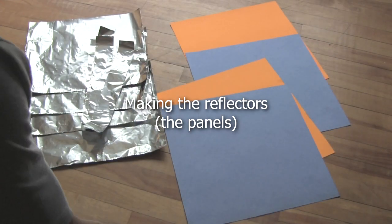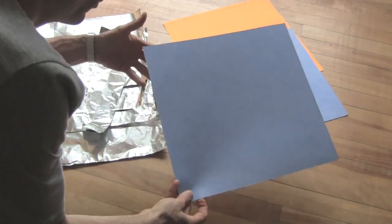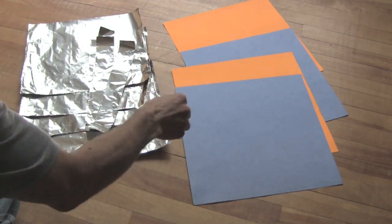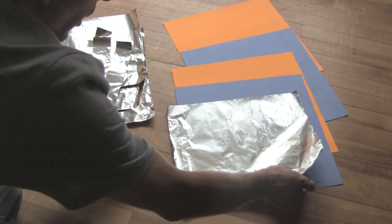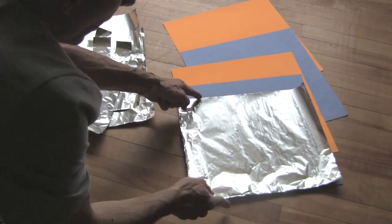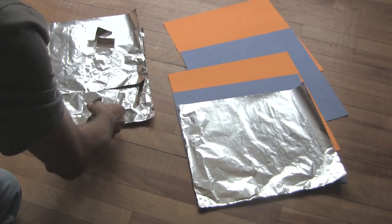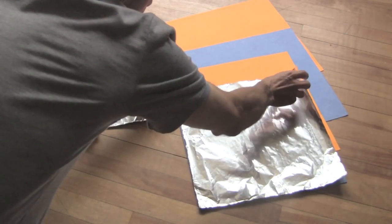To make the reflectors you need to cut out four pieces of cardboard, 14 inch by 14 inch, and you'll need to cover them with aluminum foil. My aluminum foil is only 12 inches wide so I need to cut 12 by 14 and then another 2 by 14.